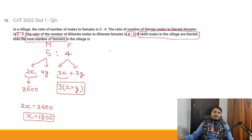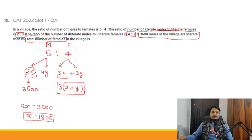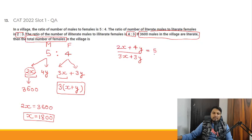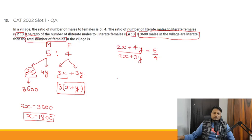Now, total males = 2x + 4y and total females = 3x + 3y. The given ratio of males to females is 5:4. So (2x + 4y) / (3x + 3y) = 5/4. We substitute x = 1800 and solve for y.